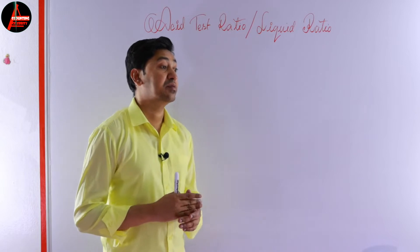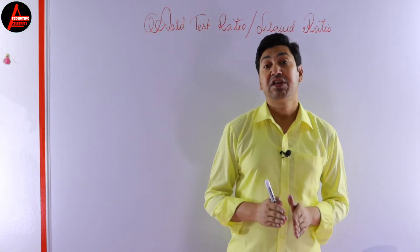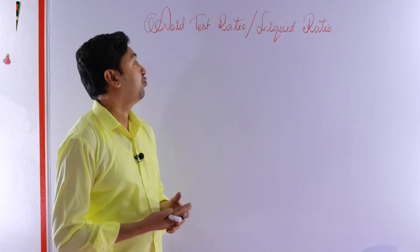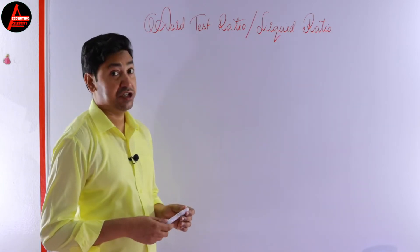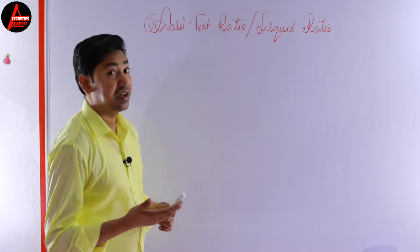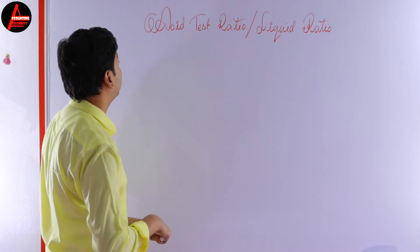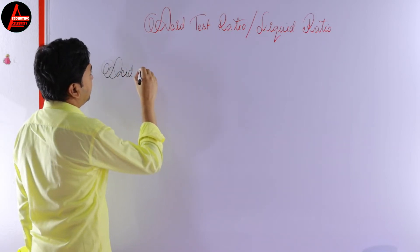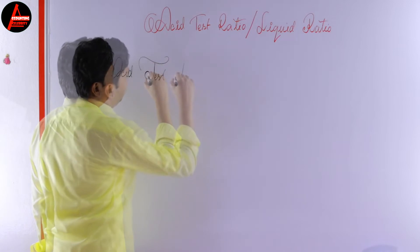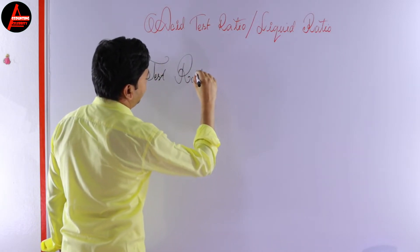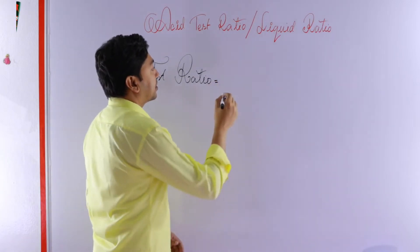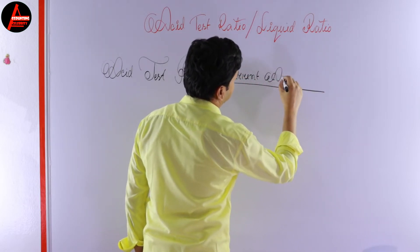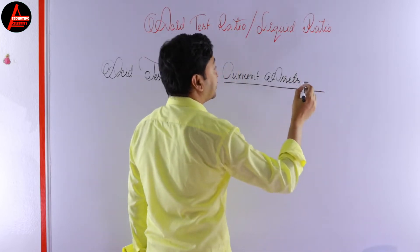Here in the question you have so many items, but not all items are relevant. You need to take only the relevant items to calculate this ratio. So what is the formula for the acid test ratio? It is very simple, but still some of you make mistakes. The acid test ratio equals current assets minus closing inventory, divided by current liabilities.